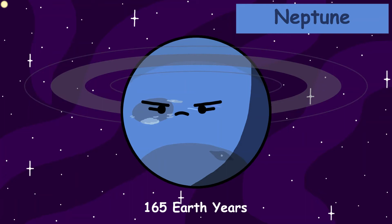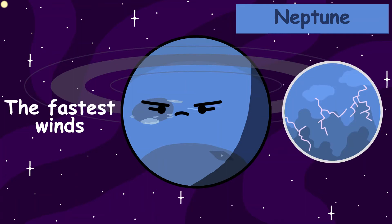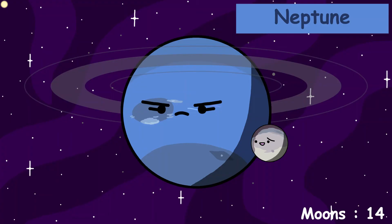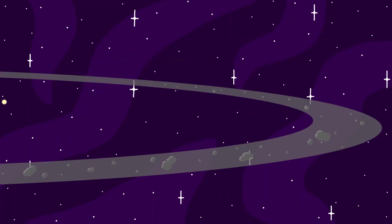Neptune is home to the fastest winds in the solar system. The wind speed in one of its storms is as fast as 2,000 kilometers per hour. Neptune has 14 moons. Past Neptune's orbit, we have the Kuiper Belt.